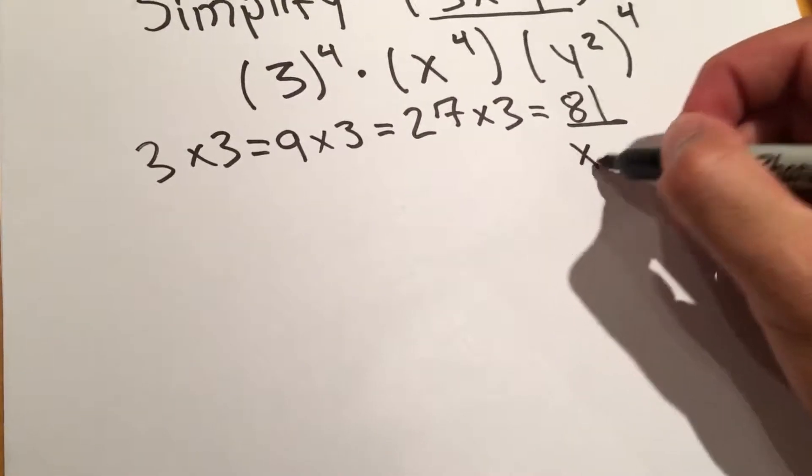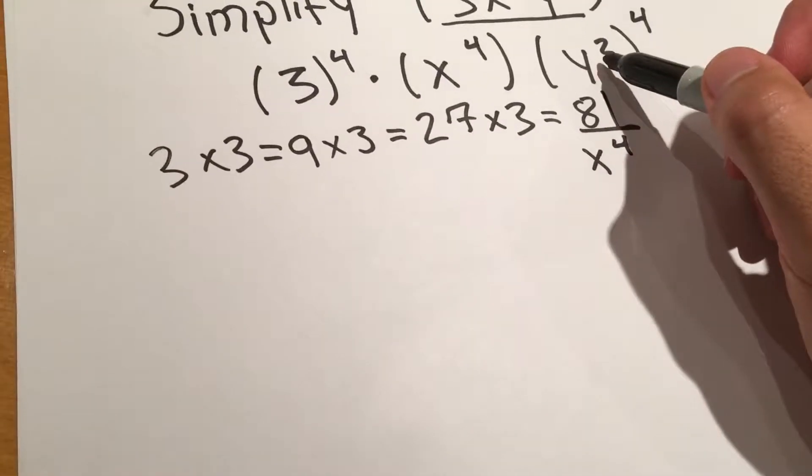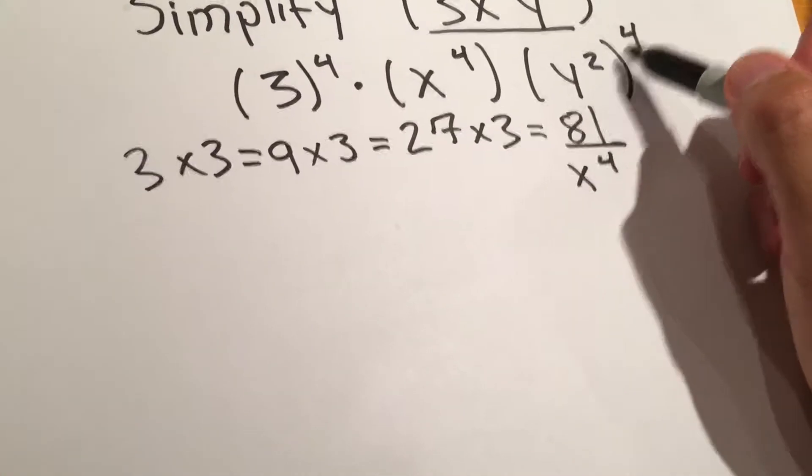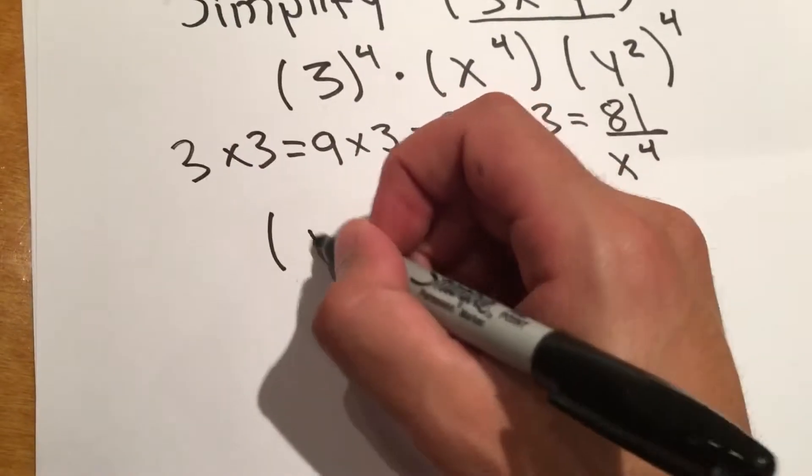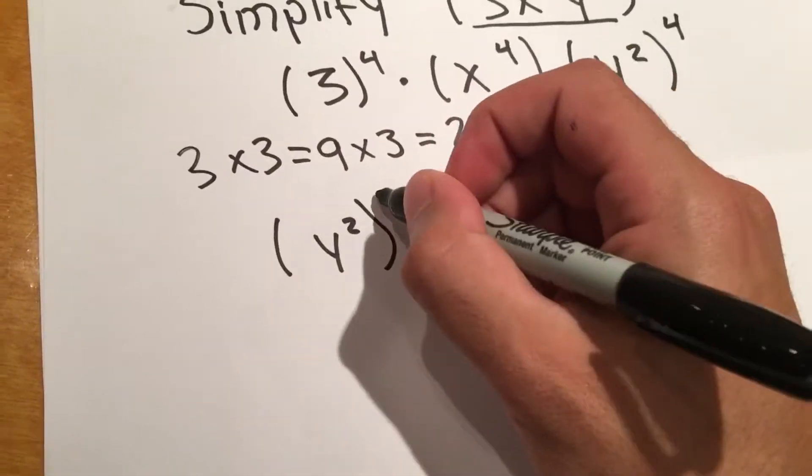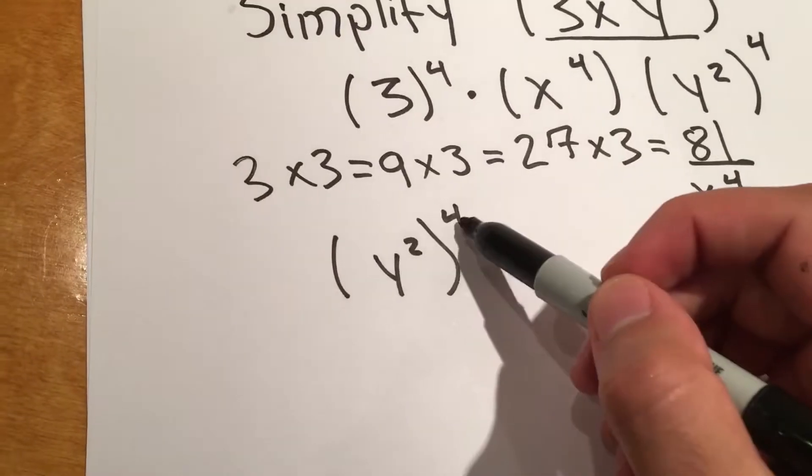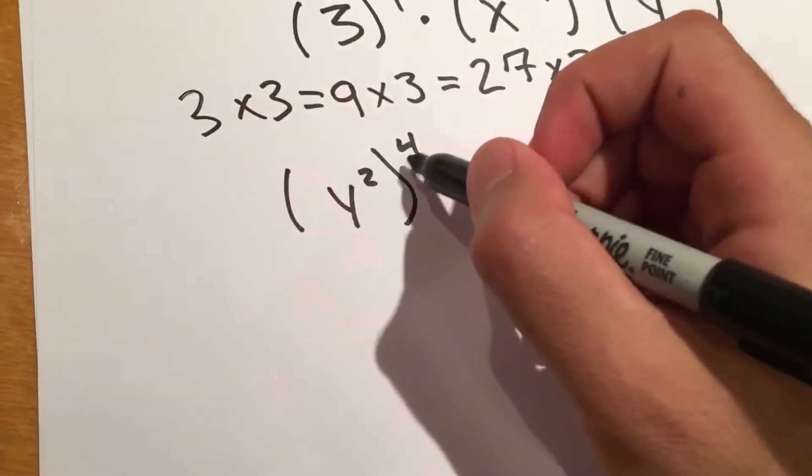x to the 4th is just x to the 4th, and for y squared to the 4th power, we can just use an exponent rule and multiply these two numbers.